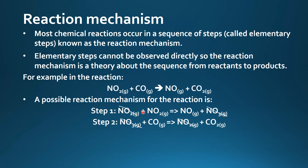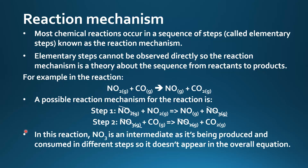That leaves us with nitrogen dioxide plus carbon monoxide yields nitrogen monoxide plus carbon dioxide, which is the same as the balanced equation. In this reaction, NO₃ is an intermediate as it is being produced and consumed in different steps, so it doesn't appear in the overall equation.